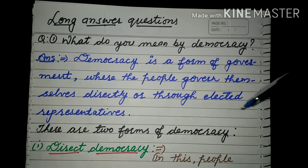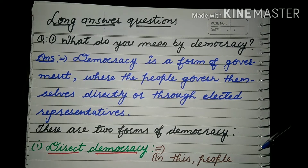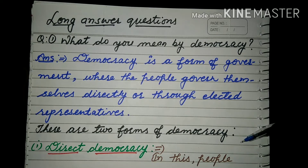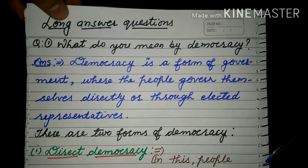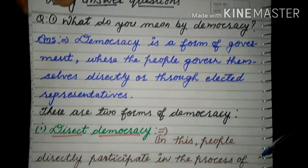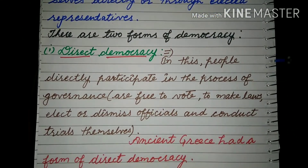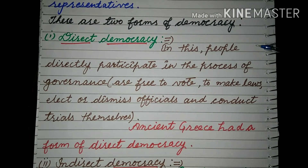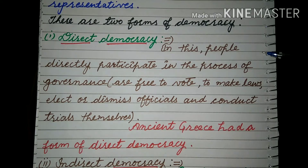There are two forms of democracy. The first is direct democracy. In direct democracy, people directly participate in the process of governance.